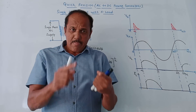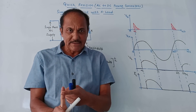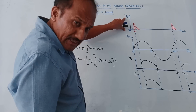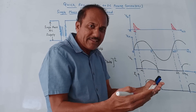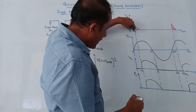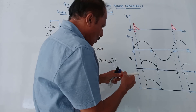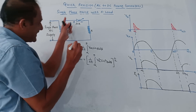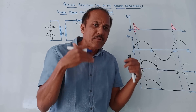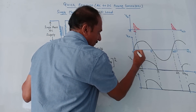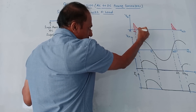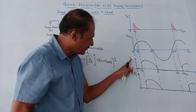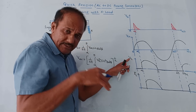Whenever the SCR is forward biased, it will not start conducting until you apply the gate pulse. This waveform indicates the instant at which we are going to apply the gate pulses. Let us say alpha is the firing angle at which we apply the gate pulses. During the positive half cycle we apply the gate pulse, and after that the actual conduction of the SCR starts. Refer to this output diagram — the load voltage diagram.